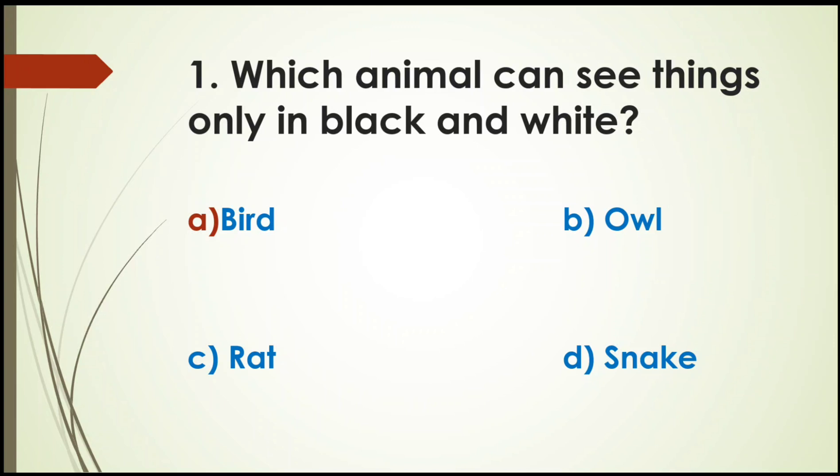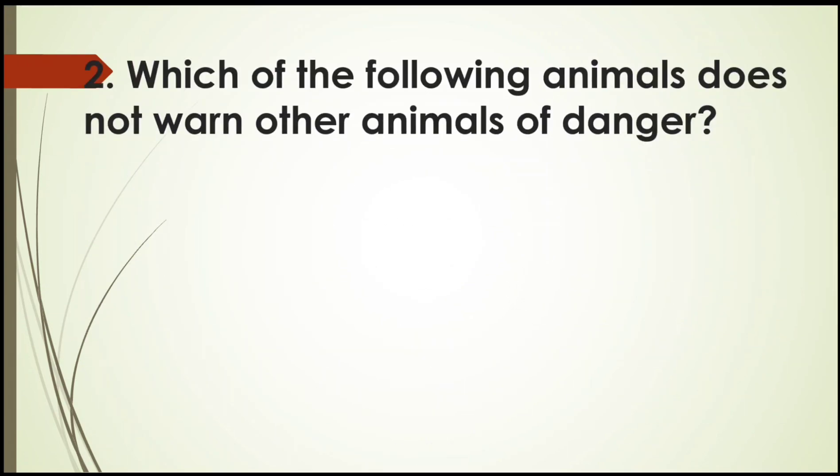Move on to the next question. Which of the following animals does not warn other animals of danger? Options are Birds, Langurs, Bats and Dolphins. The right answer is Bats. Yes, birds also make different sounds. Langurs also send messages, and Dolphins also warn other animals about dangers. So the right answer is Bats.